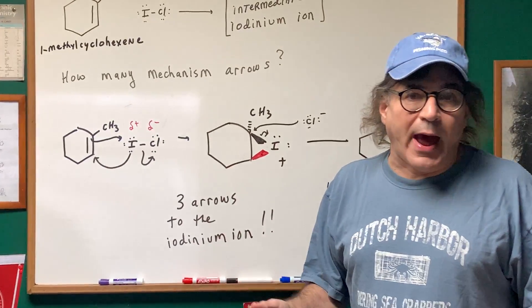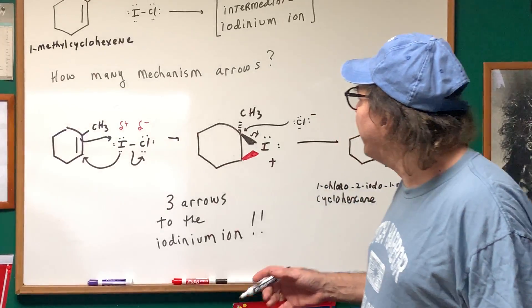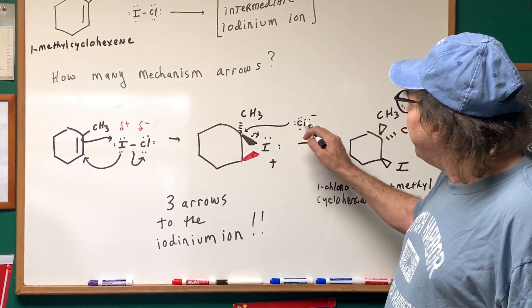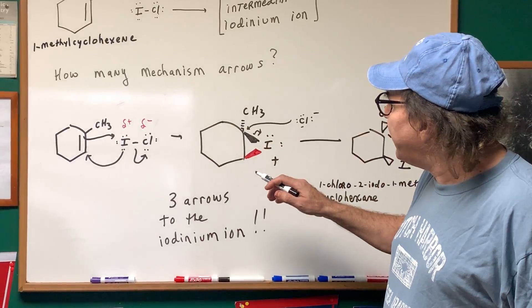But if you want to just finish it out with me, you might say, well, now what happens once we form the iodinium ion, is the Cl minus is going to now attack this intermediate.